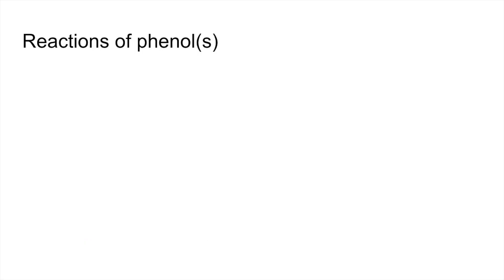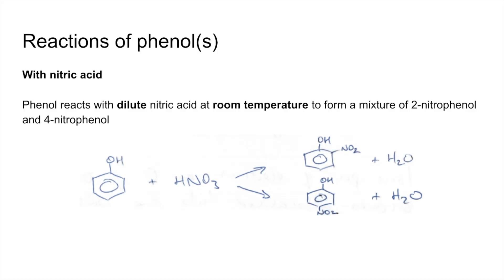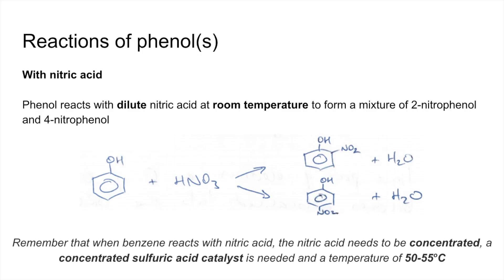The final reaction of phenol we're going to look at is the reaction with nitric acid. Phenol reacts with dilute nitric acid at room temperature to form a mixture of 2-nitrophenol and 4-nitrophenol, which is down to the fact that the OH group is a 2,4-directing group. In comparison, when benzene reacts with nitric acid, the nitric acid needs to be concentrated, we need a concentrated sulphuric acid catalyst, and a temperature of between 50 and 55°C. So you can see that phenols are more reactive than benzene.